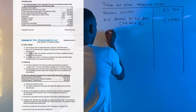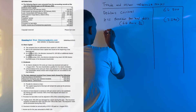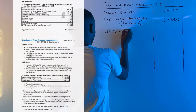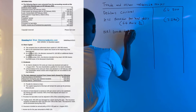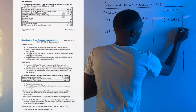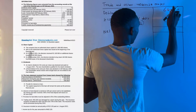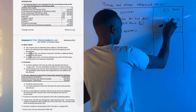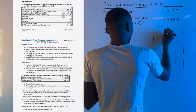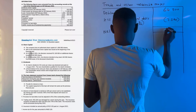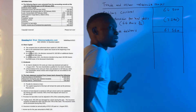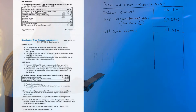After subtracting the provision for bad debts, we get the net trade debtors figure. R64,800 minus R3,240 gives us R61,560.